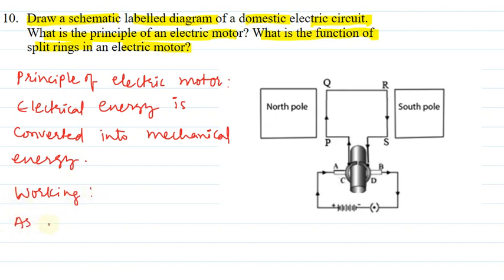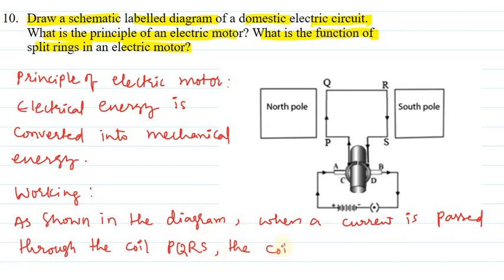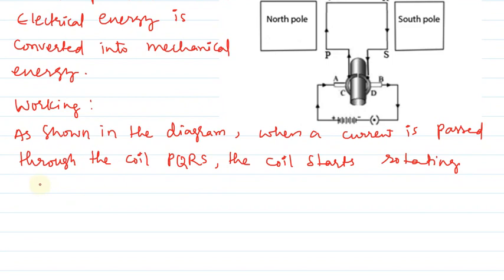As shown in the diagram, when a current is passed through the coil PQRS, the coil starts rotating in anti-clockwise direction. Coil rotate hona start hota hai anti-clockwise direction mein.